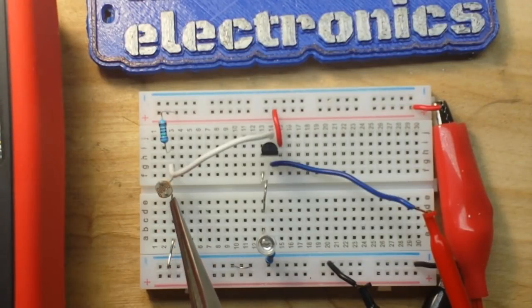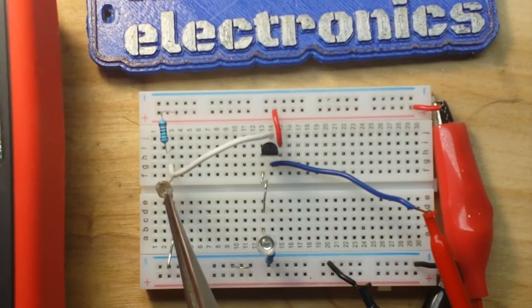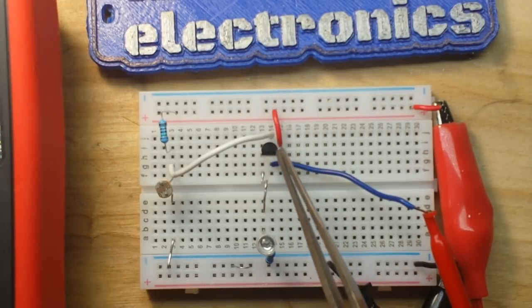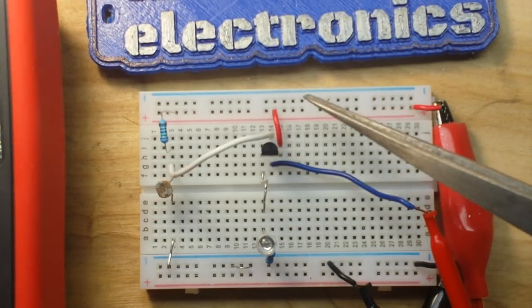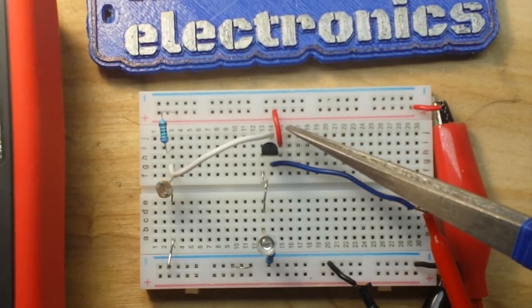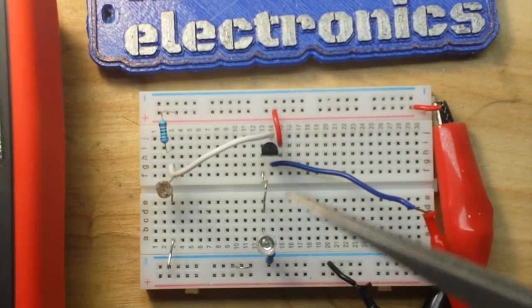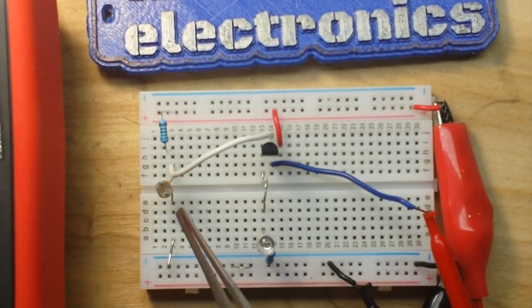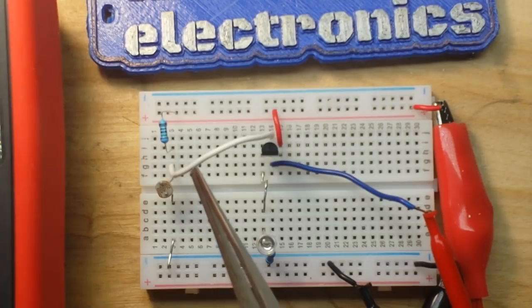All right, I have our LDR hooked up here in a voltage divider with a 7.5k resistor. Now the LDR is on the bottom of this. And over here I have a 2N2222 NPN transistor. The collector is going to 5 volts, the emitter is going to this green LED, and the base is coming off the junction of our LDR.